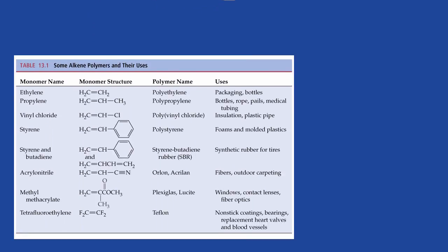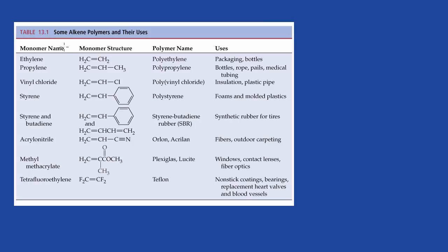Let's take a look at this table, which lists some polymers, their monomers, and their uses. If we start with the monomer ethylene, the polymer name is polyethylene, used in bottles and plastic packaging. Then we have propylene — the polymer name is polypropylene, found in plastic bottles, ropes, pails, medical tubing, and so on. Then we have vinyl chloride — we've all heard of PVC — used as plastic pipe.